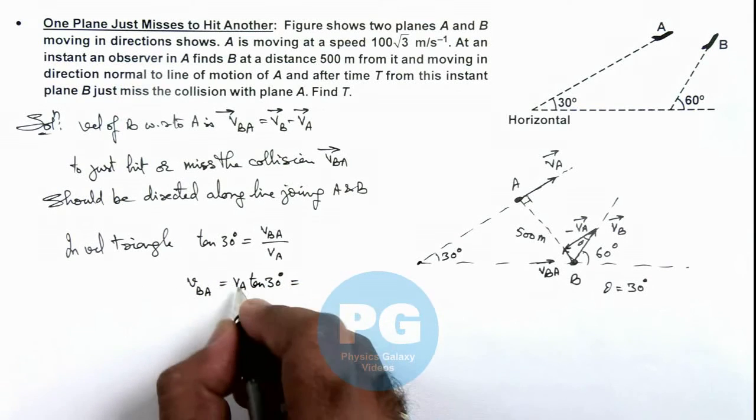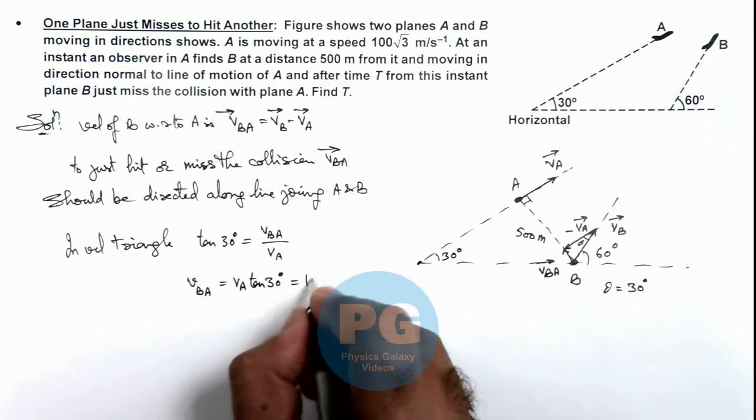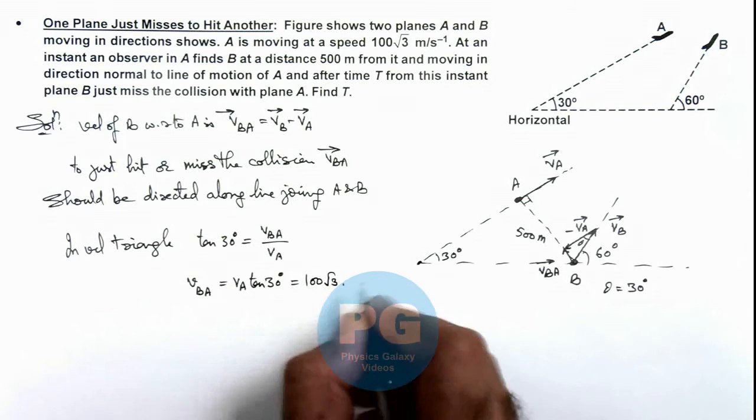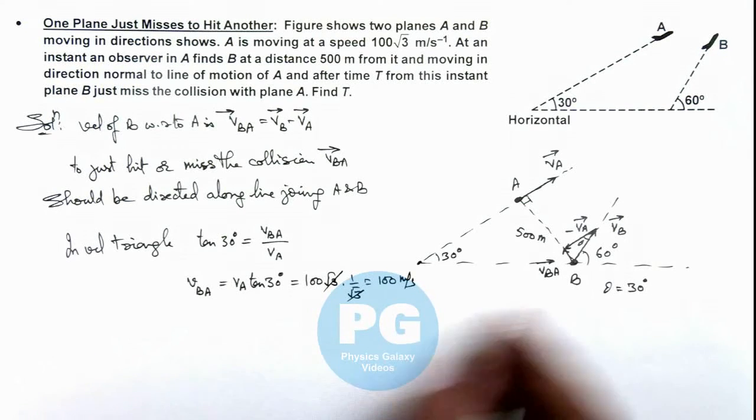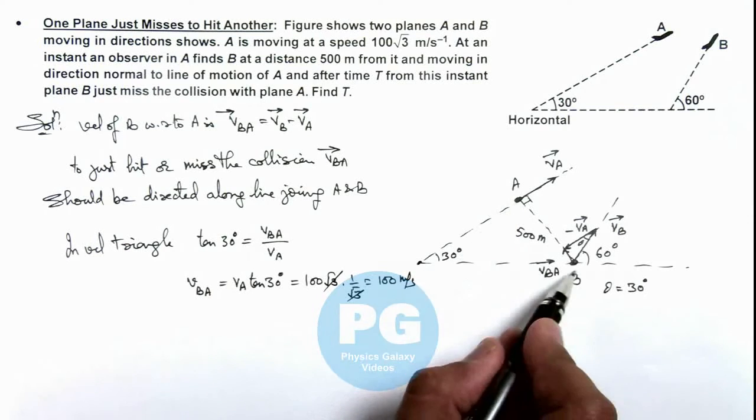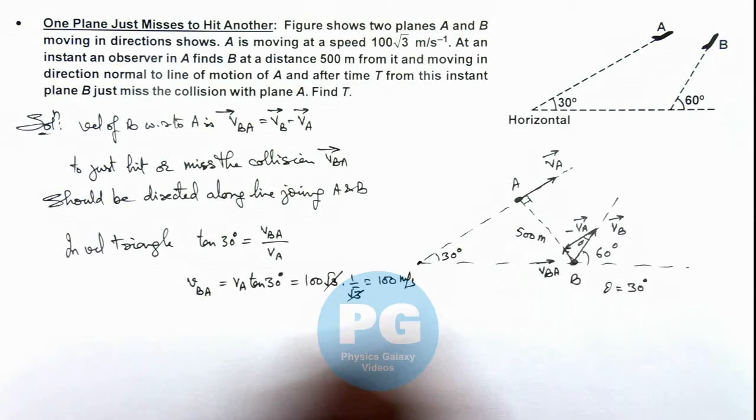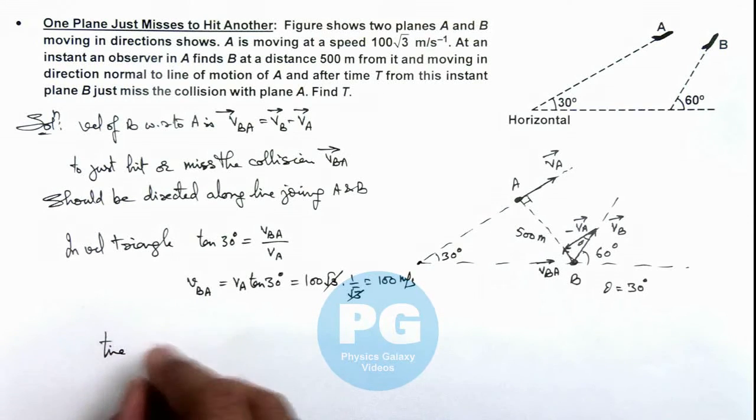So in this situation, we are given that the value of vA is 100√3, and tan 30 is 1/√3, so this is 100 meters per second as √3 gets cancelled out. And with respect to the value of vA, it has to travel 500 meters distance, so we can directly calculate time.